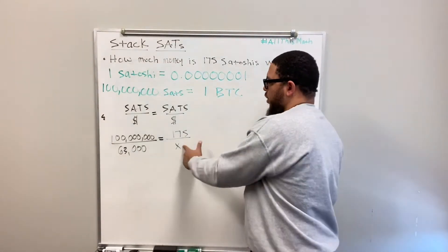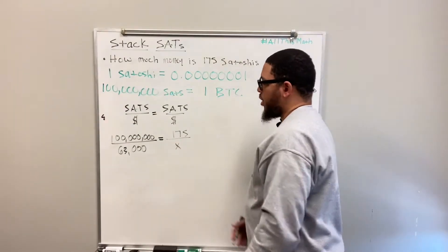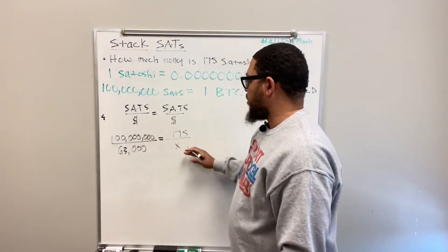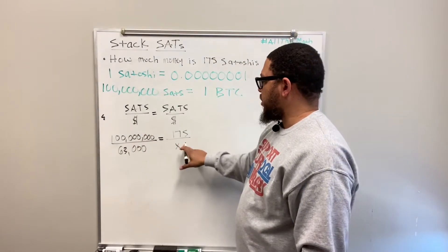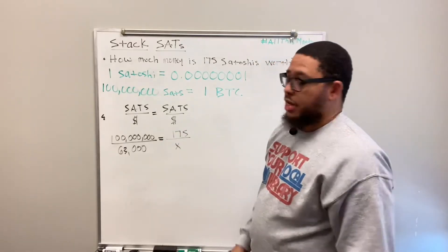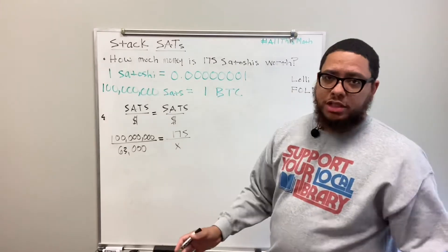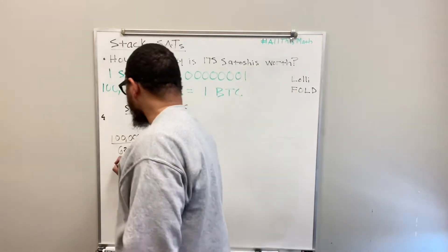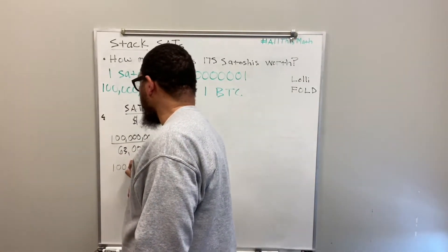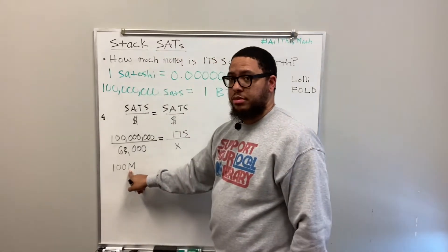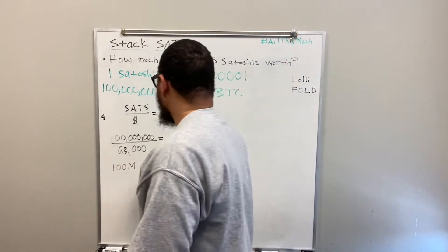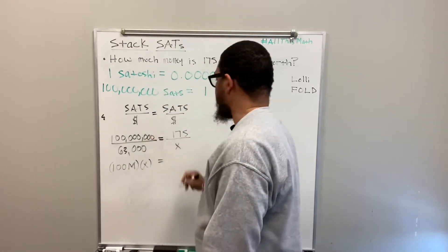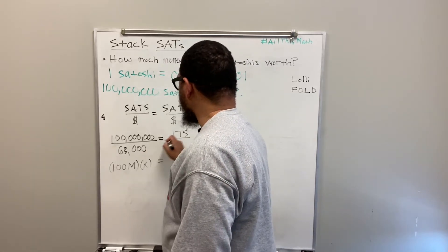To solve for x in a proportion, we cross multiply — multiply diagonally. This helps us get rid of the fractions. So: 100 million times x equals 63,000 times 175. I'll abbreviate 100 million as 100M. So 100M × x = 63,000 × 175.